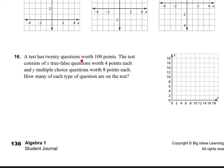Let's skip to number 16. A test has 20 questions worth 100 points. The test consists of x true-false questions worth 4 points each, and y multiple-choice questions worth 8 points each. How many of each type of question are there on the test? So the first thing that I want to do is write my equations. So I have a total of 20 questions altogether. And so we have some number x plus some number y is equal to 20.